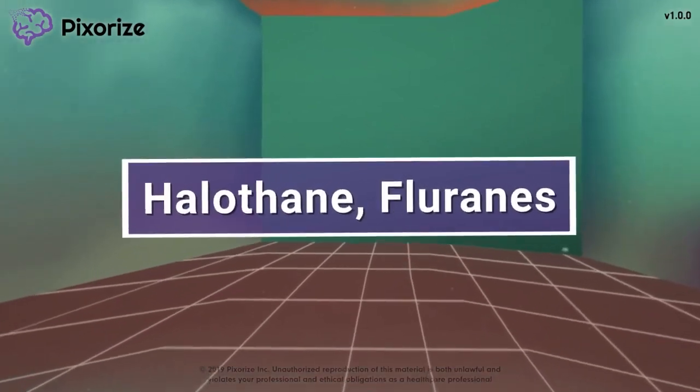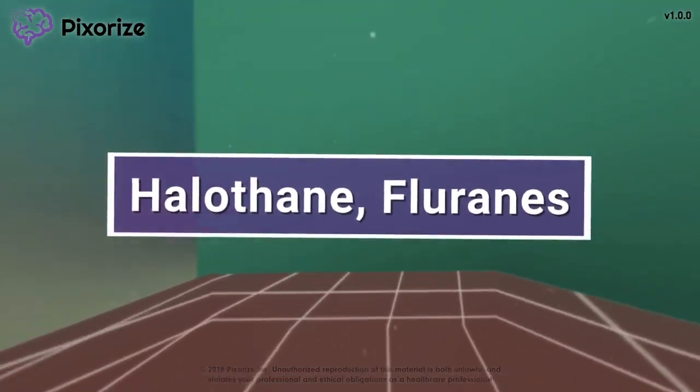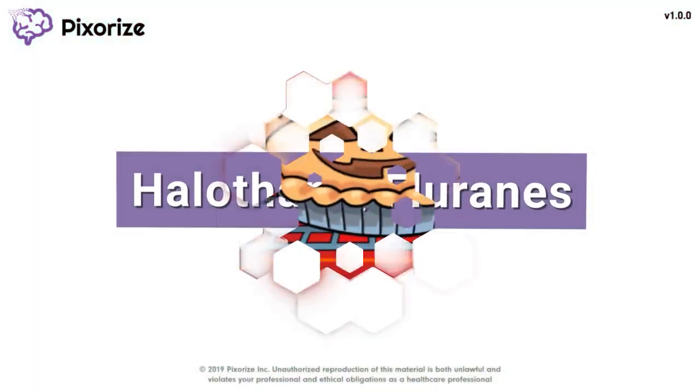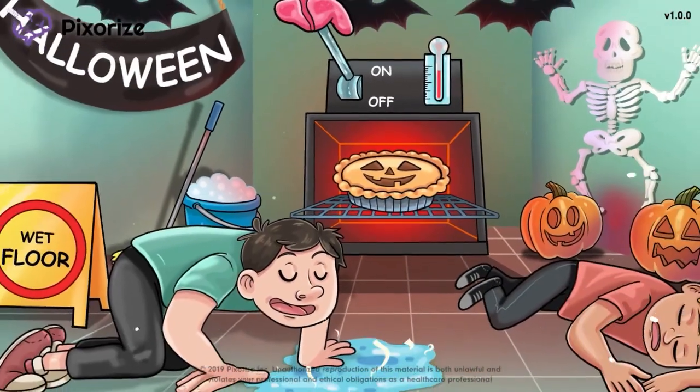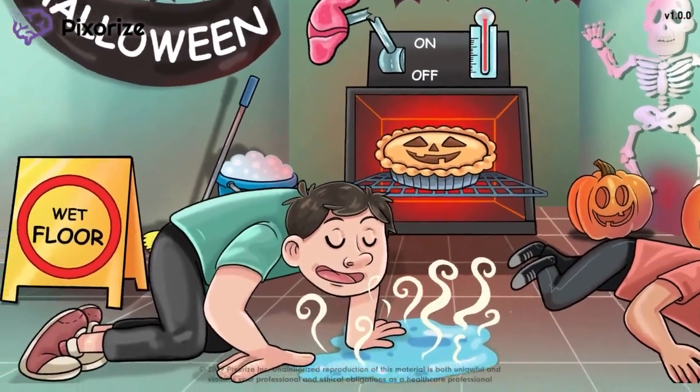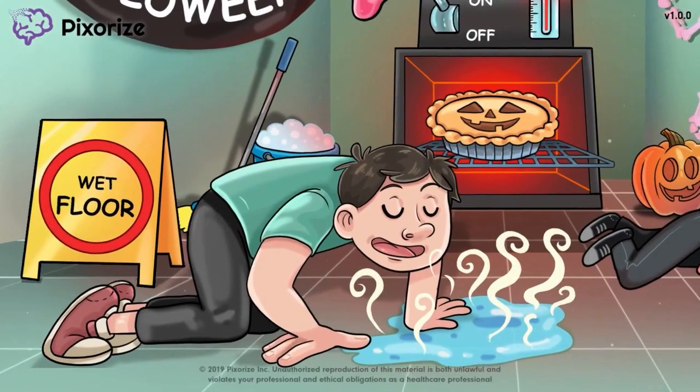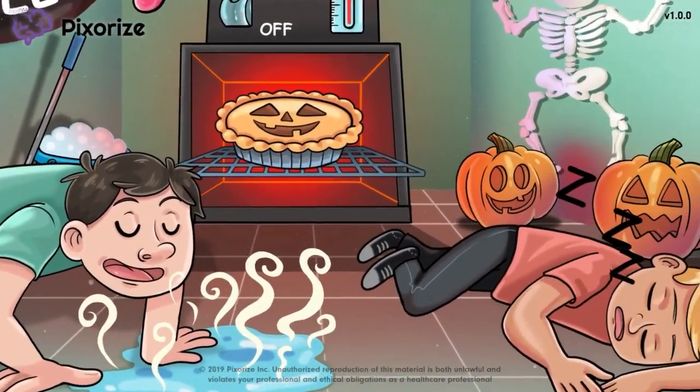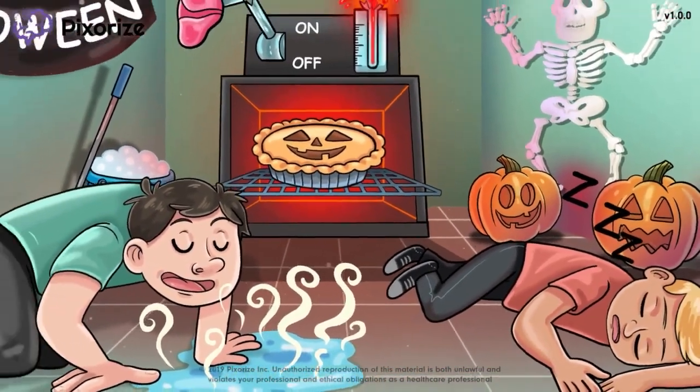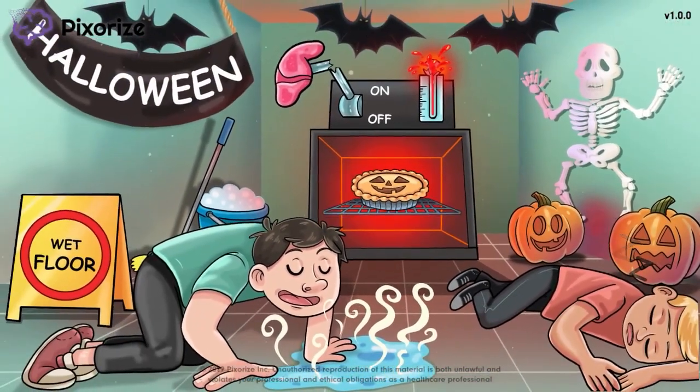Halothane and fluorine drugs are medications used to induce anesthesia. In this mnemonic video, we'll cover everything you need to know about halothane and the fluoranes, so you'll be ready come test day.